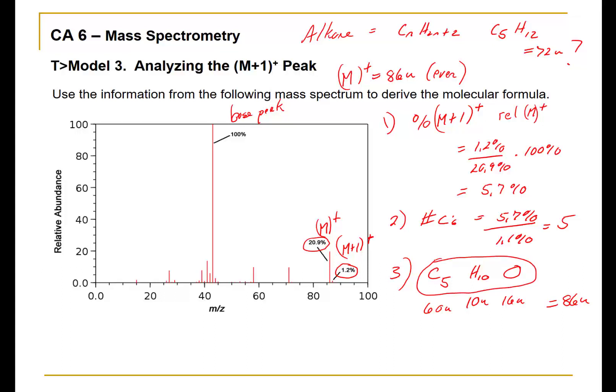In first-year chemistry, we determined the molecular formula often by using combustion analysis. This sort of mass spectrometric analysis is even easier for quickly arriving at the molecular formula for a compound.